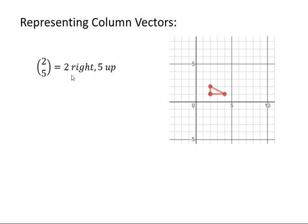If the two is positive, it means two to the right, and if the five is positive, it means five up, like this. You can see that every point on this right-angled triangle has moved two to the right and five up.